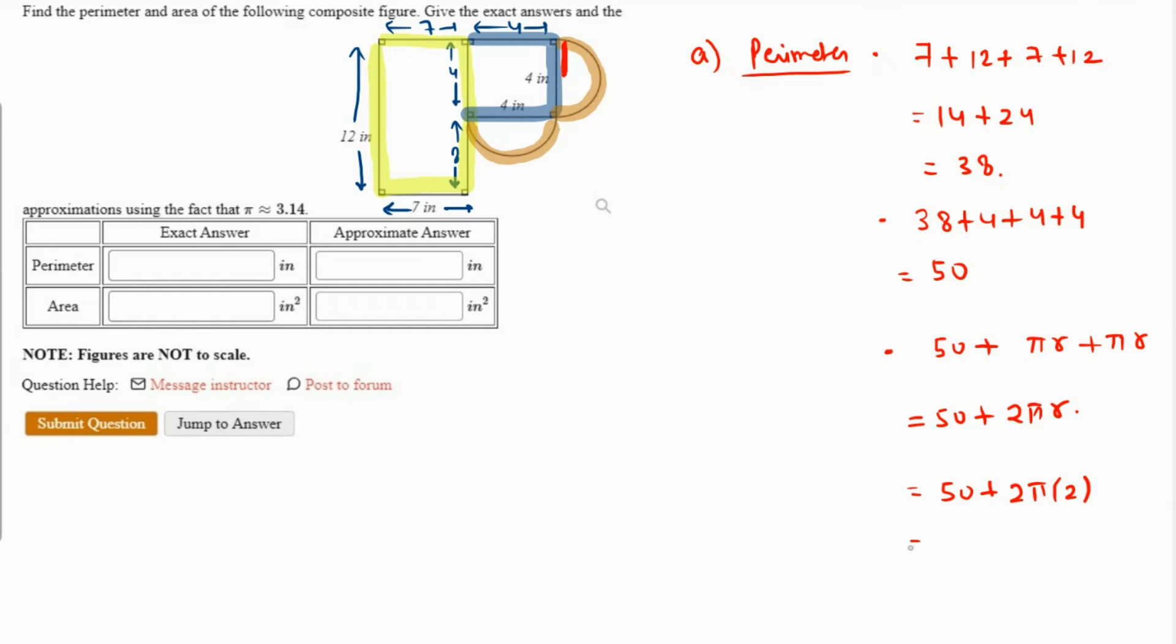This is the required perimeter in inches. This is the exact value: 50 plus 4π. And the approximate value, using π as 3.14, that's going to be just replacing π with 3.14, and that's going to come out as 62.56. Now I'm going to clear this up and work for the area.